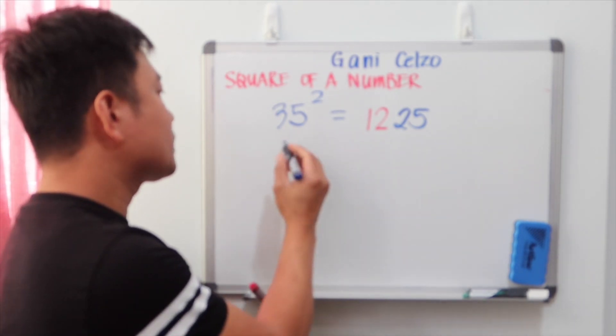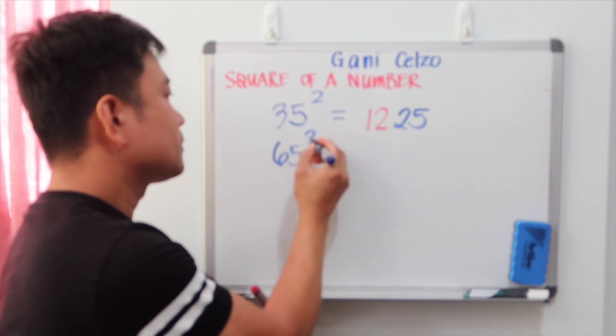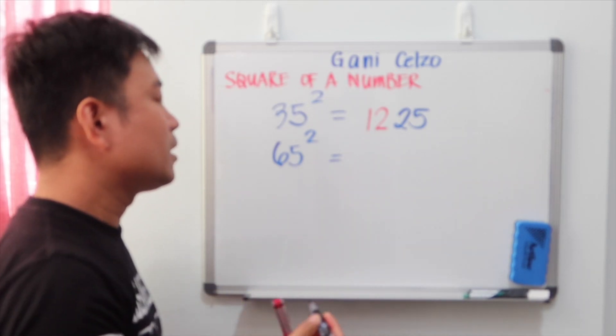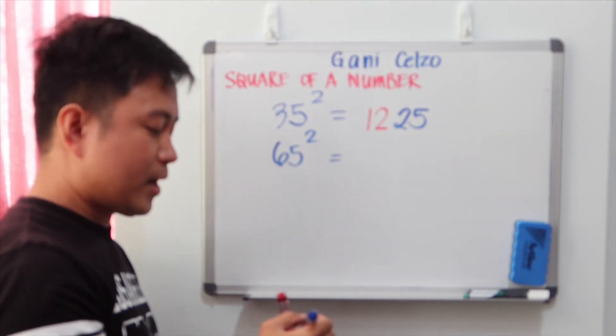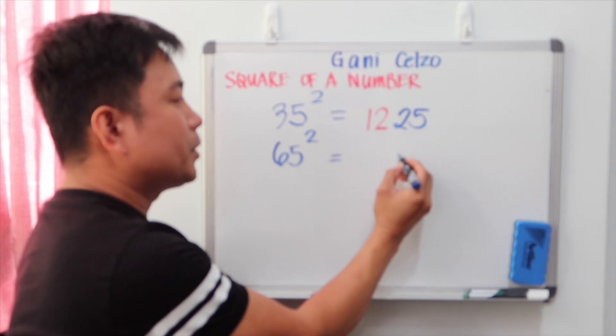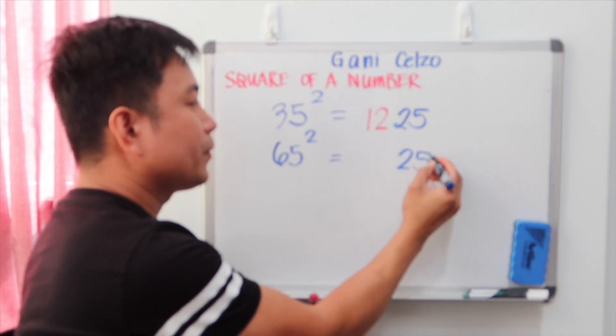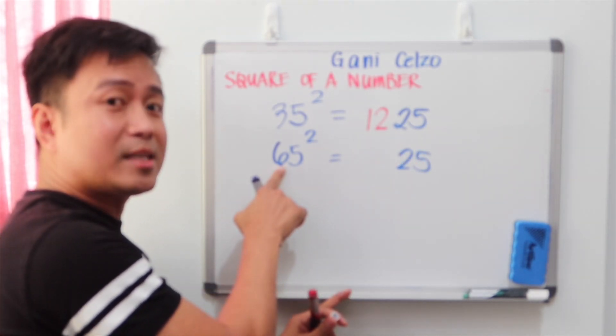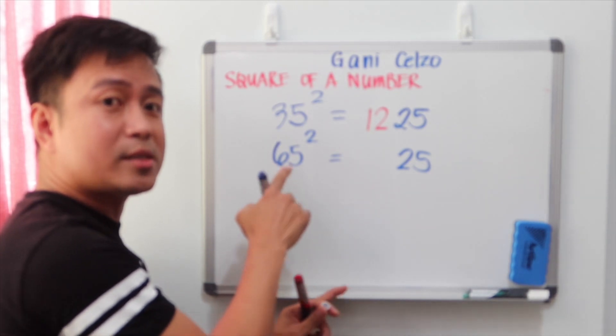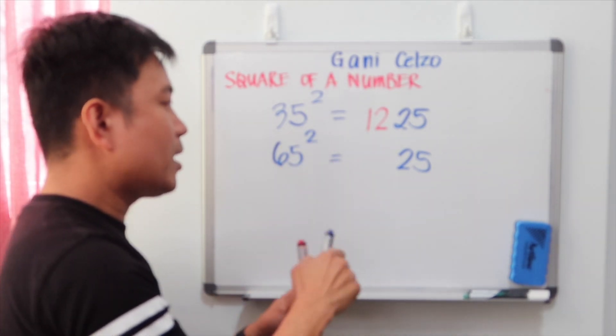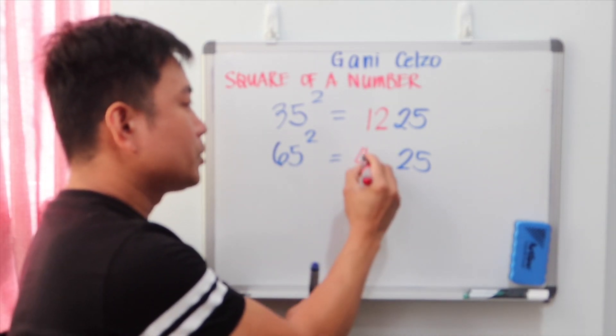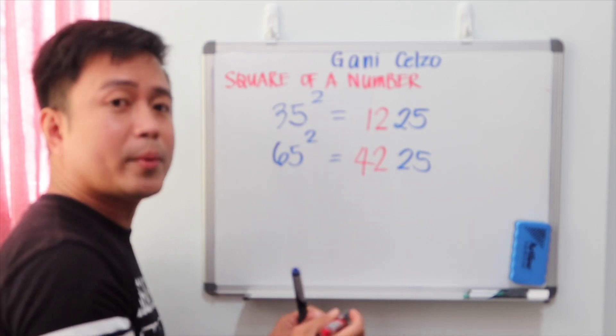If I give you 65 square, the answer is 4225. Again, the last two numbers would be 25. Instead of 6 times 6, you need to do 6 times 7. So that will be 42. So that's 4,225.